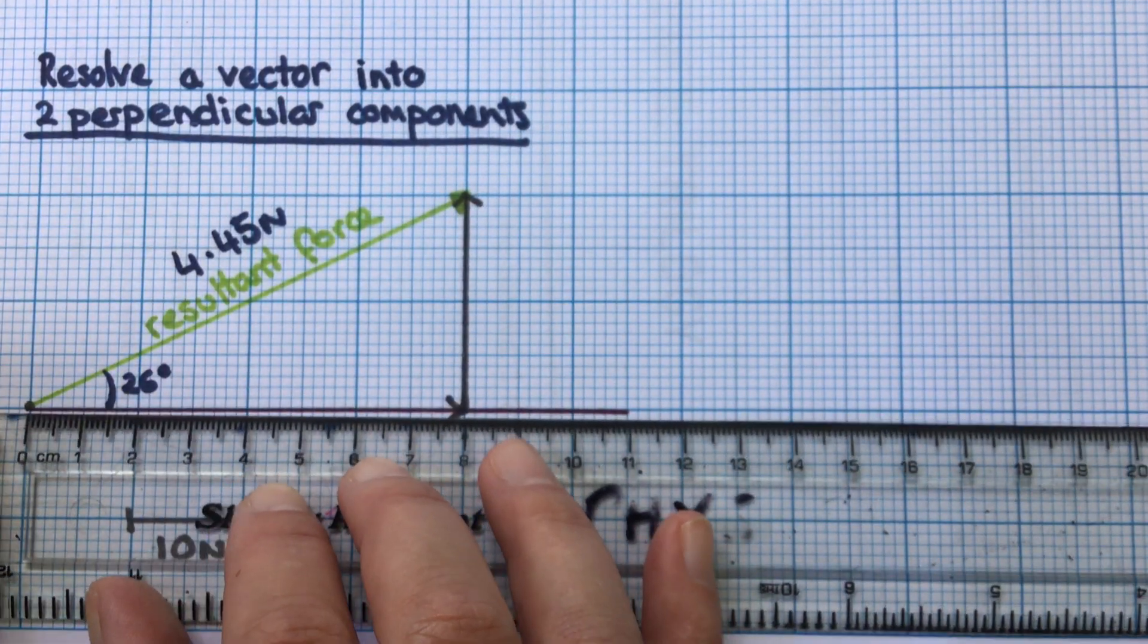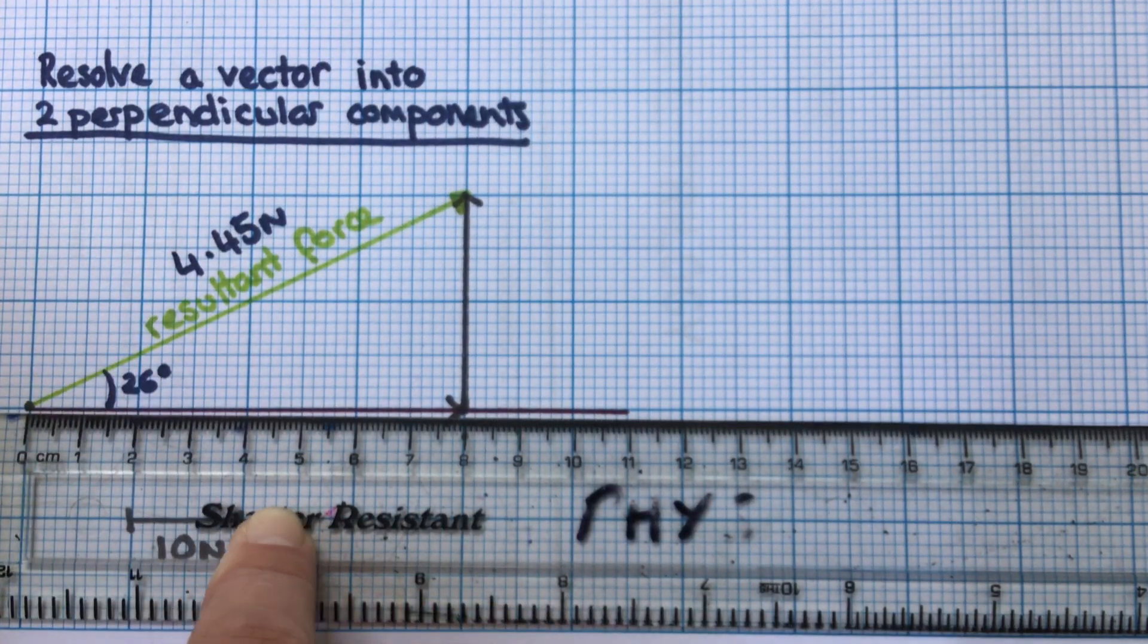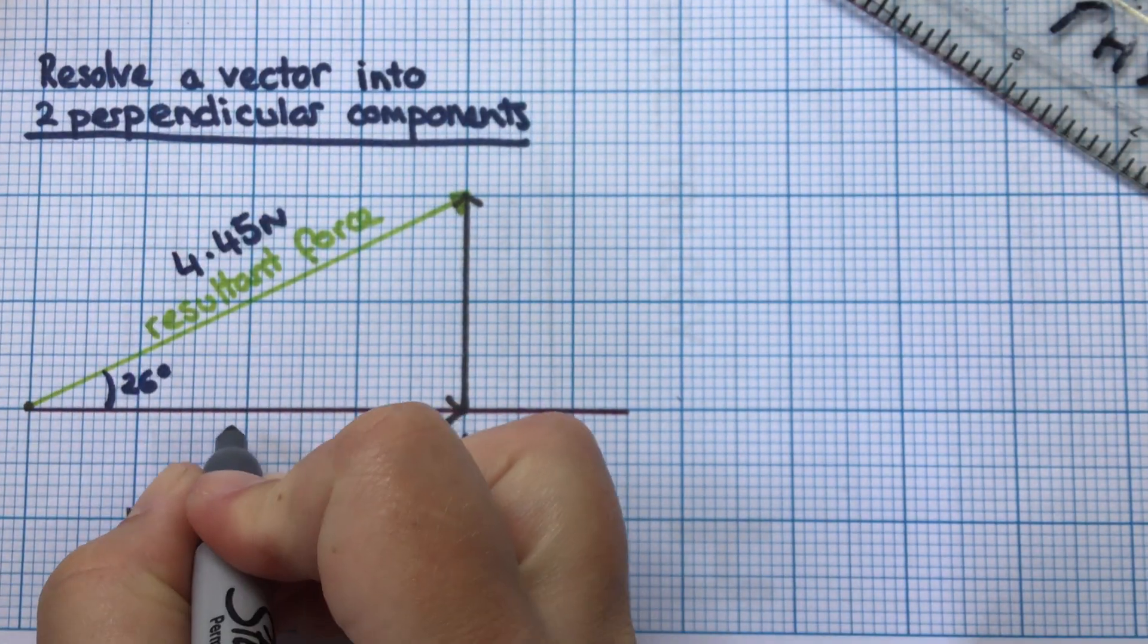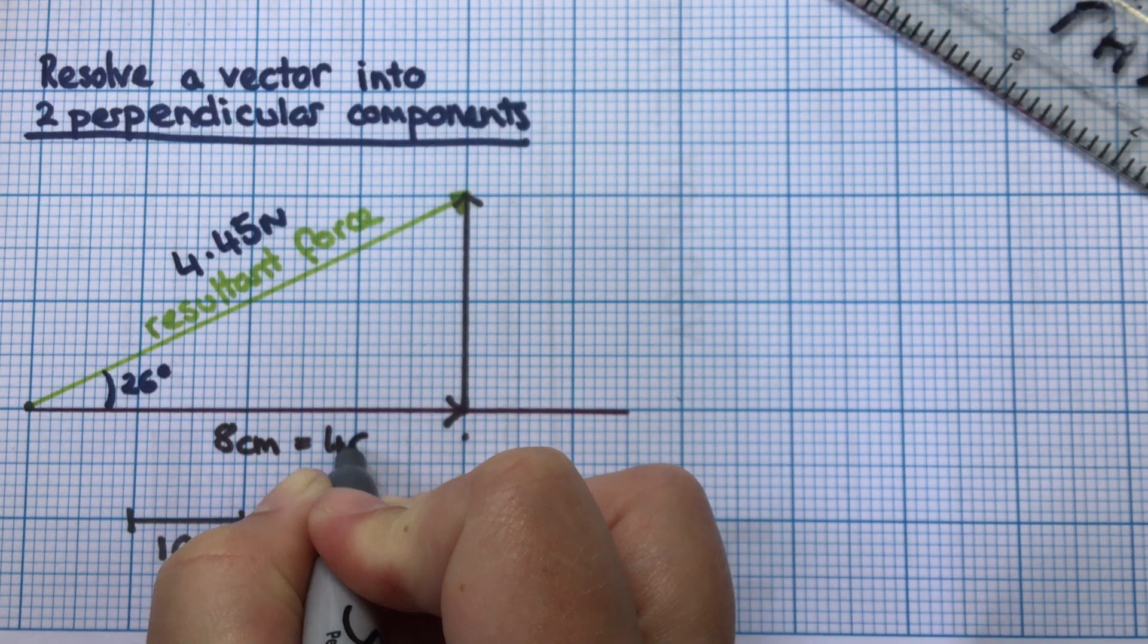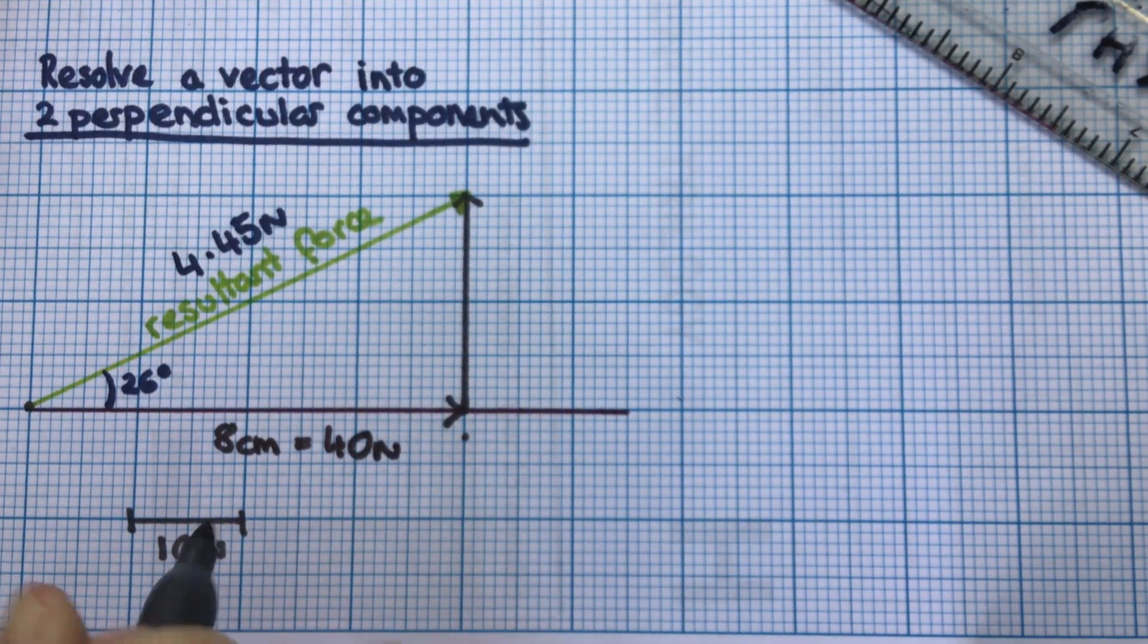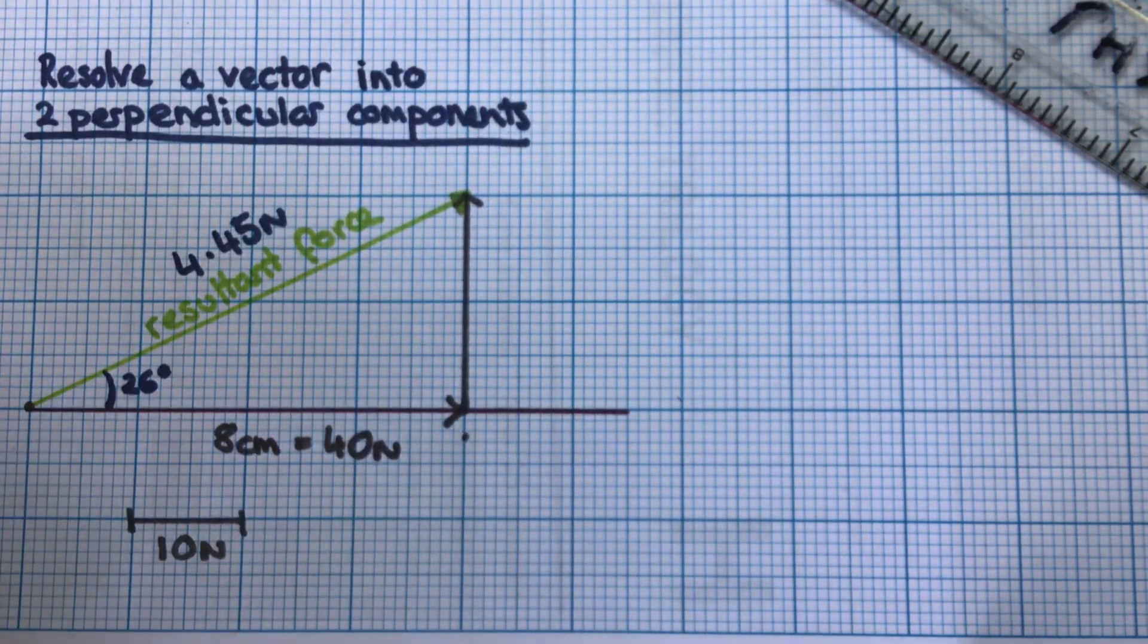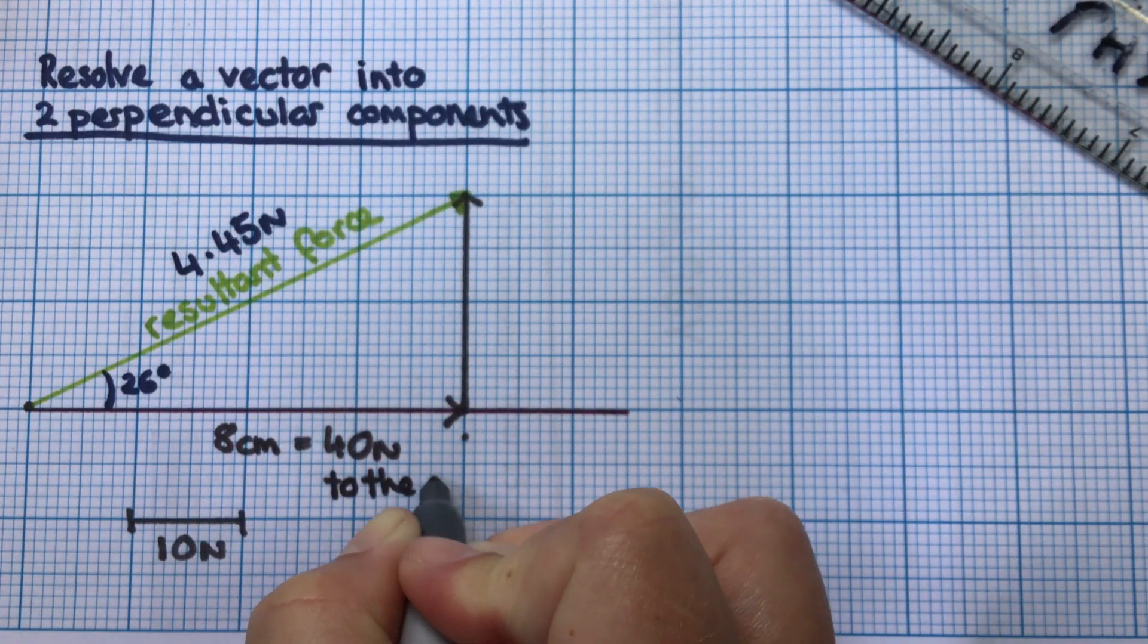I'll measure with a ruler the length of this. This is eight centimeters, so that equals 40 newtons using this scale. For each different question you need to check the scale. I've got 40 newtons to the right—that's magnitude and direction.